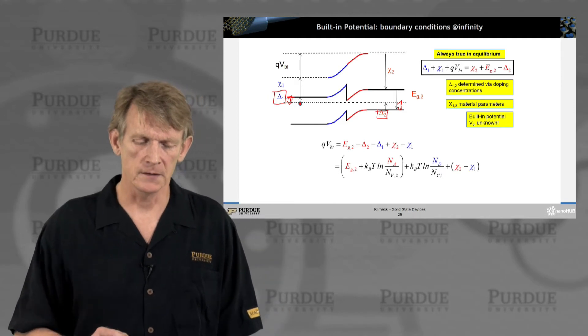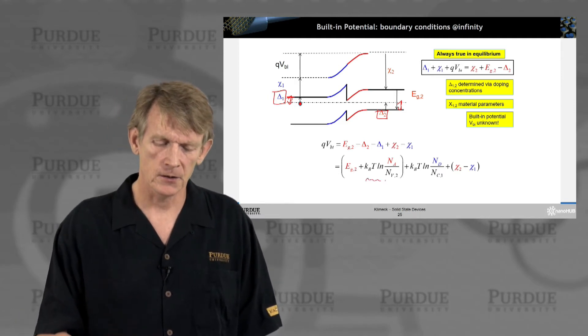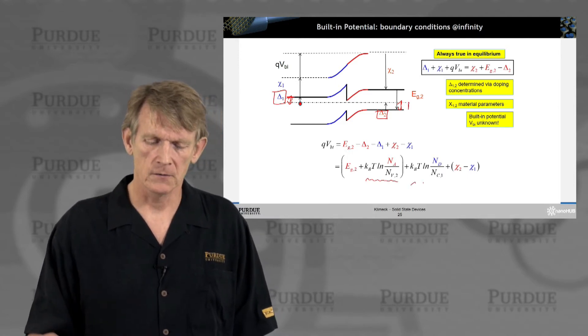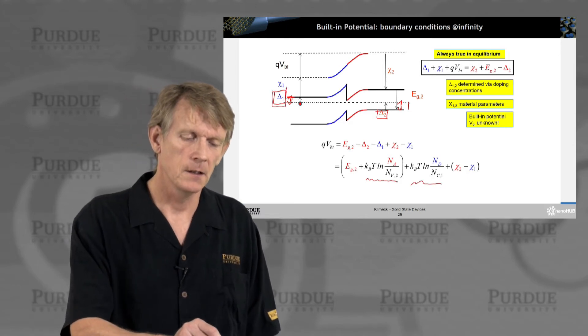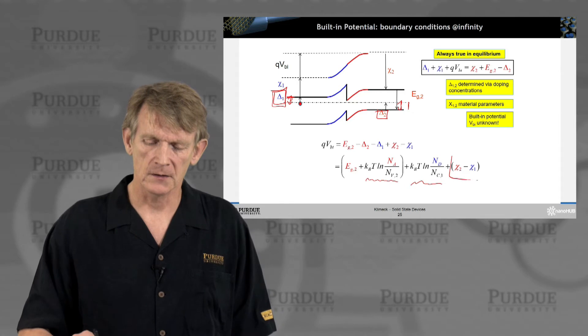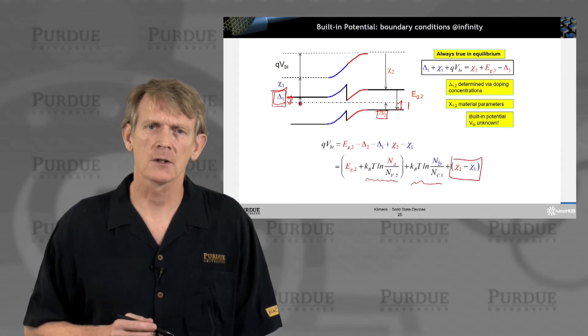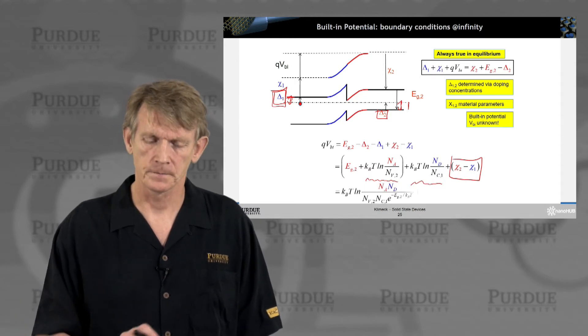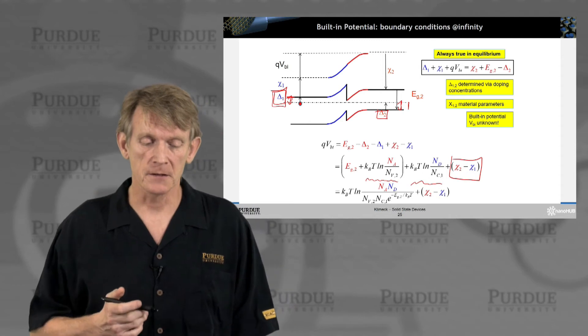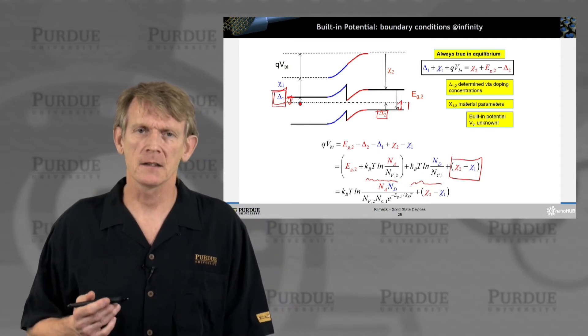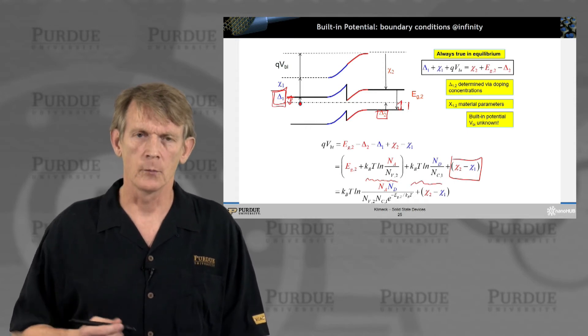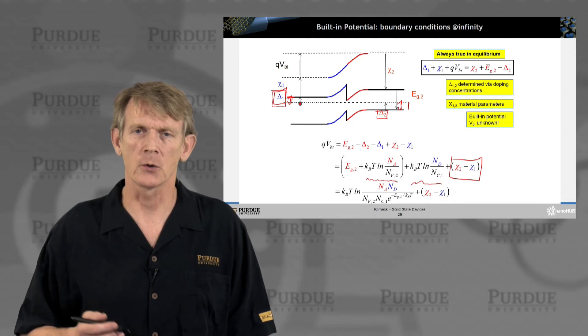Now you can determine delta 1 and delta 2 via doping concentrations. Chi1 and chi2 are material parameters. And the built-in potential is the unknown that we need to find. The built-in potential is the difference between the gap and delta 2, delta 1, chi2, and chi1. You just solve this expression from the top.